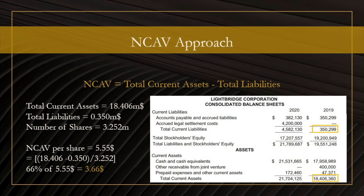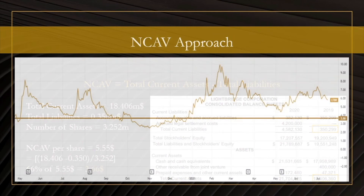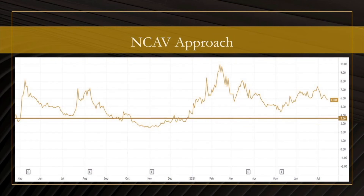The final part of the strategy is to ensure there is a margin of safety. In particular, that means taking 66% of the NCAV per share we just computed and using that as a price of entry. In this example, that amounts to $3.66. Here we see a diagram showing the company's share price from May 2020 to July 2021, with the price of entry at $3.66. Applying the 66% NCAV approach to Lightbridge Corporation would have given a successful outcome, as the price is currently trading near $6 per share.